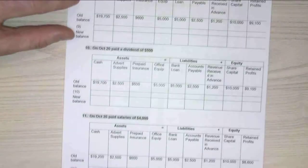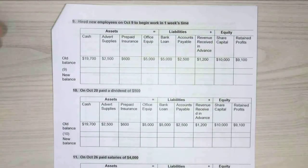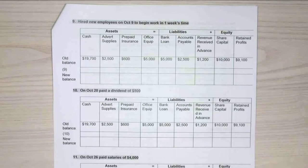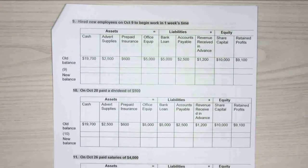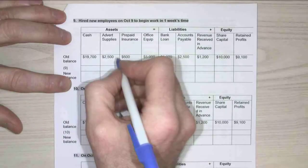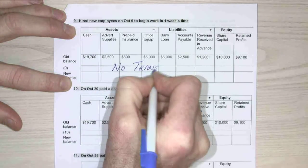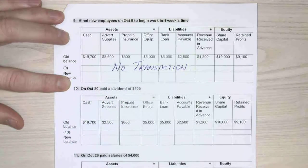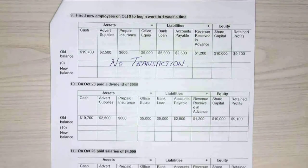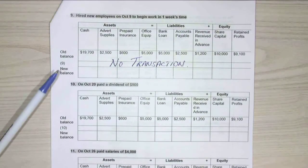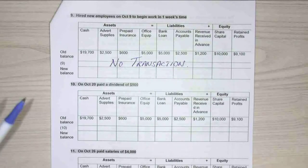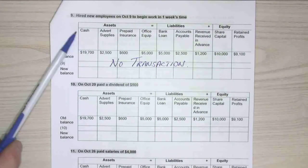Transaction number nine: we hired a new employee on the 9th of October to begin work in one week's time. Nothing changes — this is an event, not a transaction. There's no amount to record; the employee hasn't worked for us and we haven't paid them. You will be asked to identify transactions versus non-transactions. No obligation and no assets, so nothing is recorded.